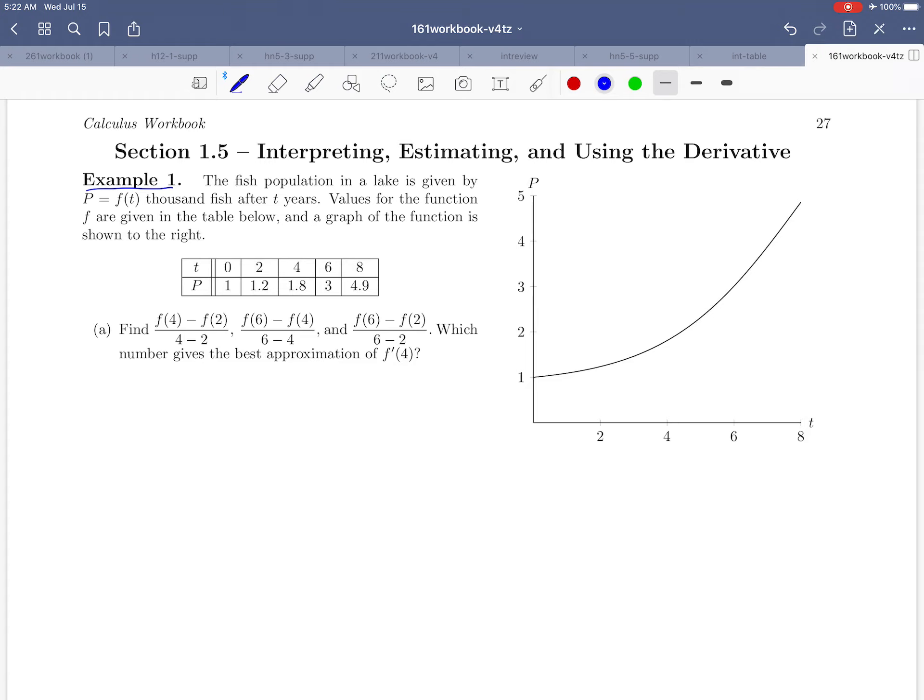Okay, so let's start reading example one here. The fish population in a lake is given by p equals f of t thousand fish after t years. Values for the function f are given in the table below and a graph of the function is shown to the right. They're going to ask us to do several calculations. Before we do that, let's look at our graph and remind ourselves what the units are here. We're measuring t in years on the horizontal axis and p is being measured in thousands of fish.